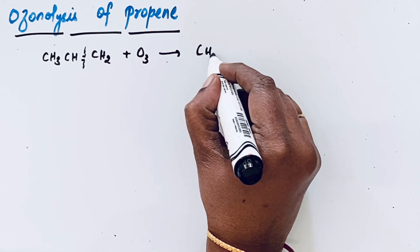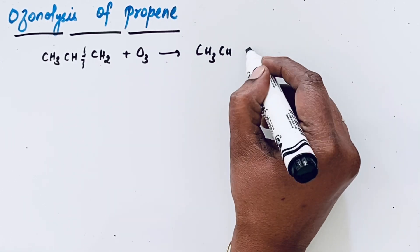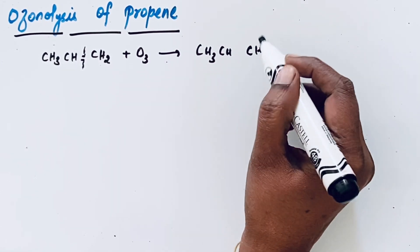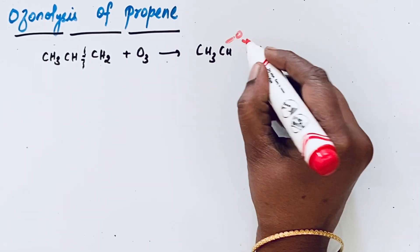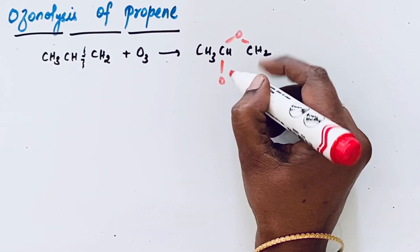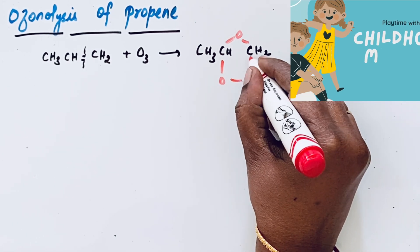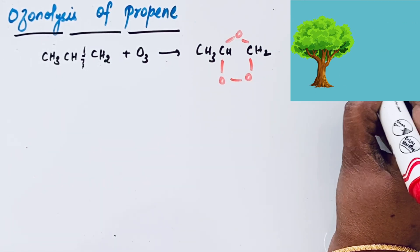It forms ozonide CH3CH...CH2. There are three oxygen atoms in ozone molecule - one oxygen atom, then second one, then third one. So it looks like a small hut.